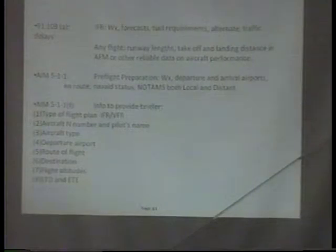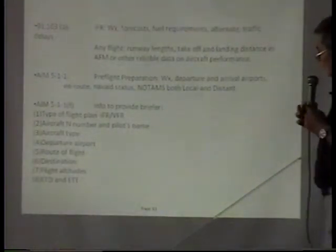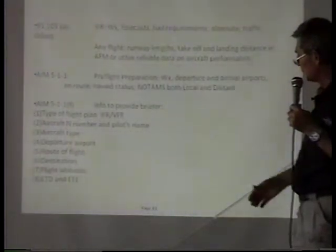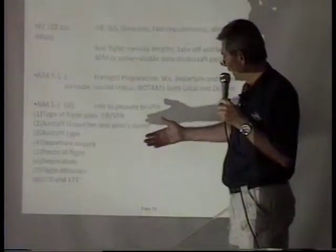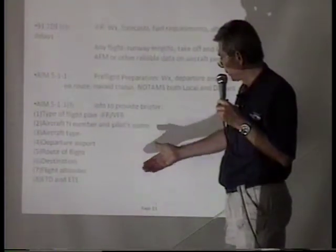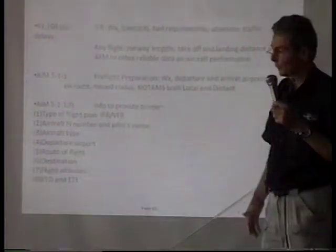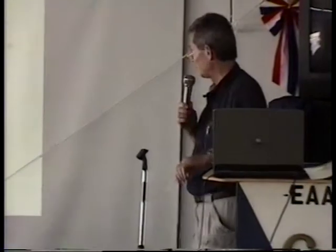Under AIM 511F, the information you're to provide to the briefer includes: type of flight plan whether IFR or VFR, the aircraft N number, pilot's name, aircraft type, departure airport, route of flight, destination, flight altitude, and ETD and ETE. When I call in for a brief, I tell them who I am, my tail number, where I'm departing from, my altitude, and time of departure. I don't typically give them my time of arrival — maybe that's a shortcoming on my part.